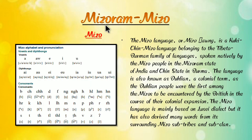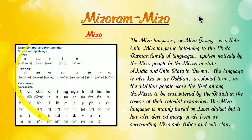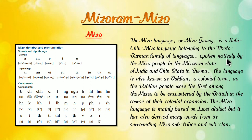Next — Mizoram in Mizo. In the state of Mizoram, the Mizo language is spoken. The Mizo language belongs to the Tibeto-Burman family of languages spoken natively by the Mizo people in the Mizoram state of India.